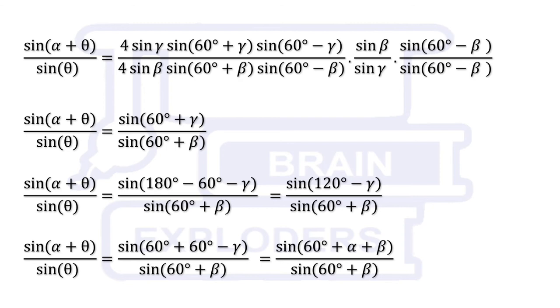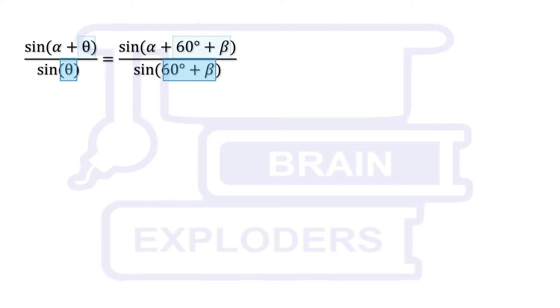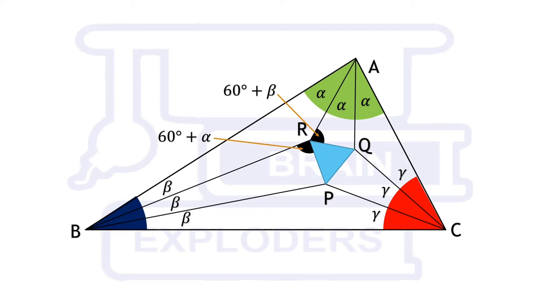Use the property sin 180 minus theta equals theta and replace 60 minus gamma with alpha plus beta. On comparing both sides, we can see that 60 plus beta is written in place of theta in denominator as well as in numerator. Hence, we can say that theta equals 60 plus beta. Now, on looking at this figure, we can directly tell that angle BRP is 60 plus alpha.